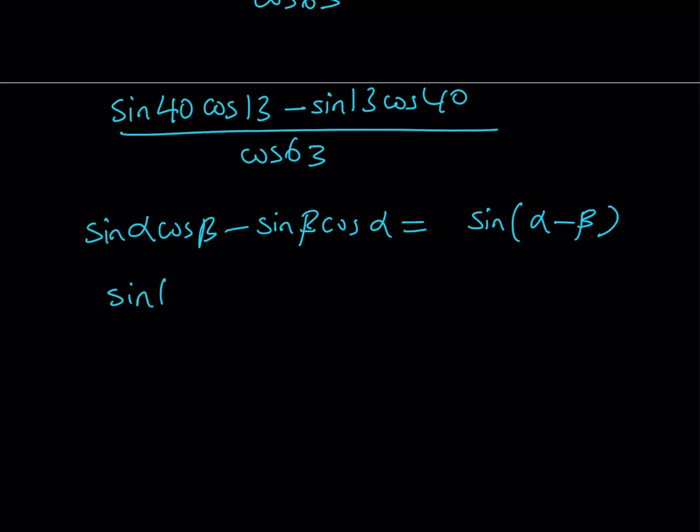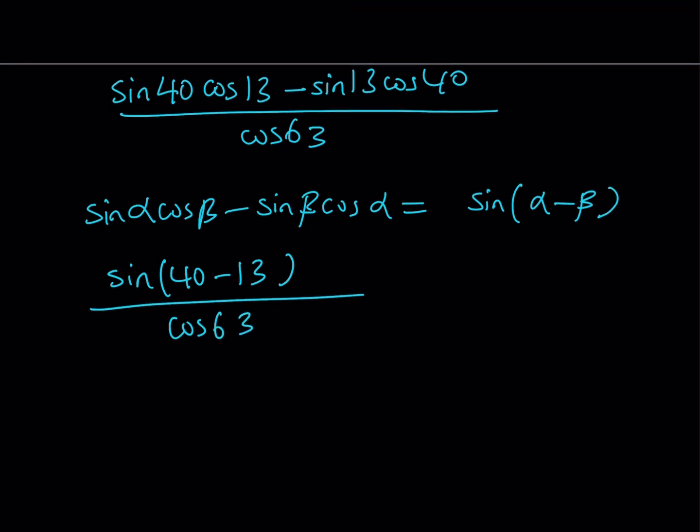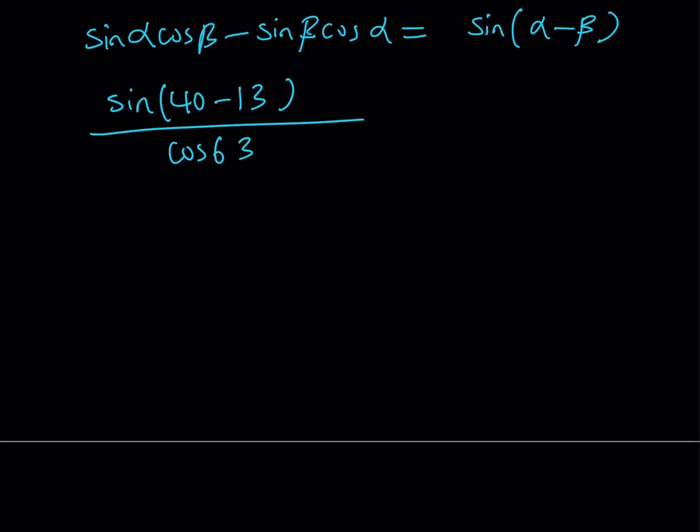And then let's go ahead and divide it by the denominator. And once you simplify this you're going to get sine of 40 minus 13 which is 27 divided by cosine of 63 degrees.